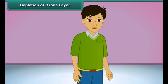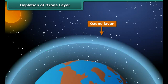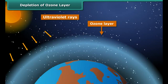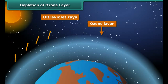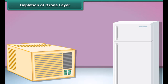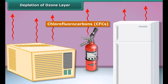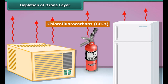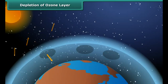Let us learn about the ozone layer. It is a layer of ozone gas in the upper atmosphere of the earth. It protects us from the harmful ultraviolet rays of the sun. Things like air conditioners, refrigerators, and fire extinguishers release chlorofluorocarbons — CFCs — into the atmosphere and create holes in the ozone layer. CFCs are another type of air pollutant.